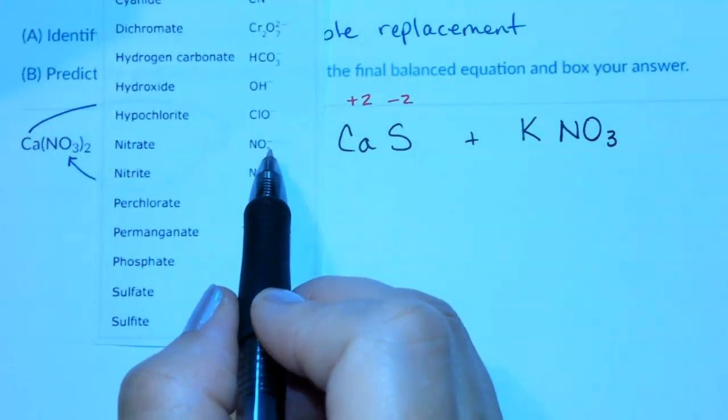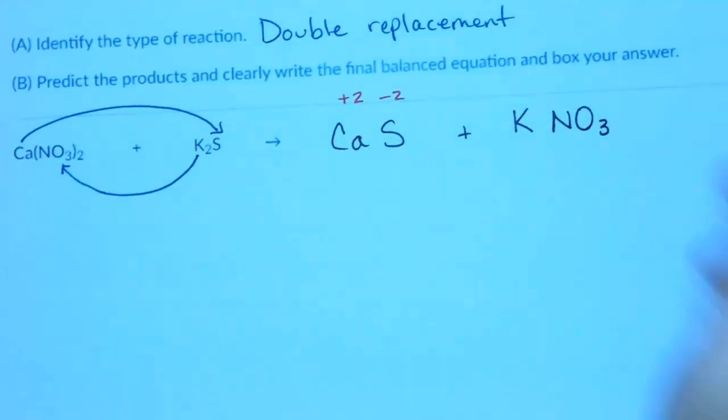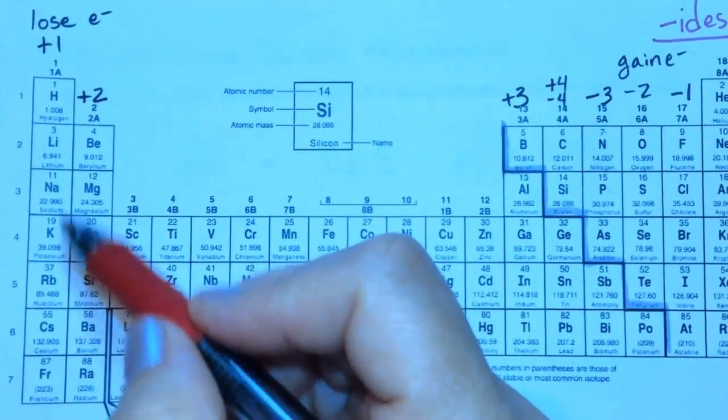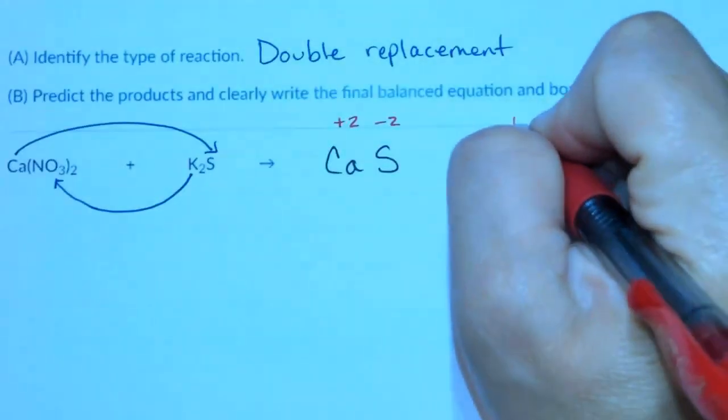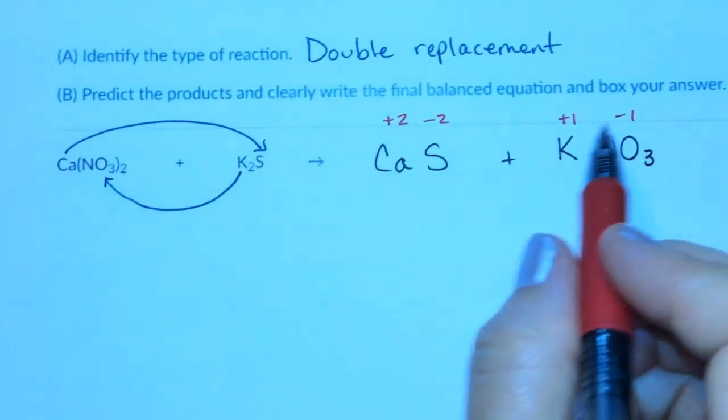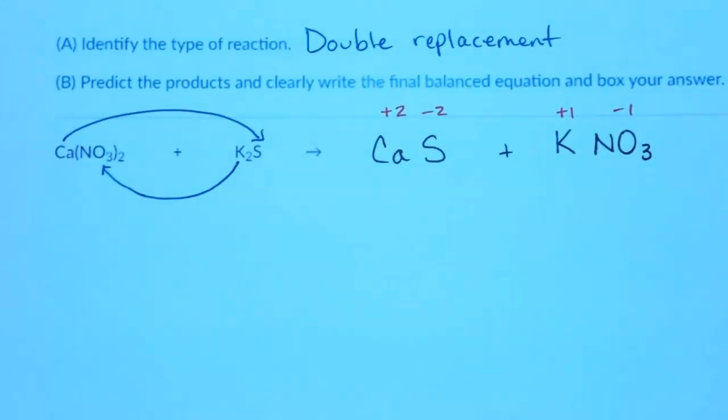Notice that it has a charge of a negative 1. So we'll put negative 1 for the nitrate, and then we'll look up potassium's charge is a positive 1. And then positive and negative 1 will balance or cancel with each other.